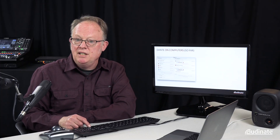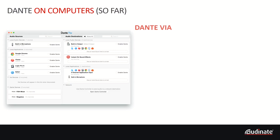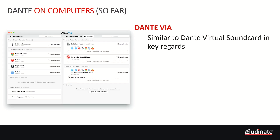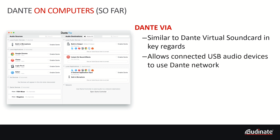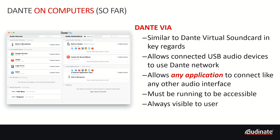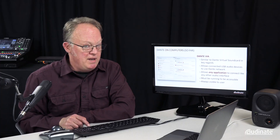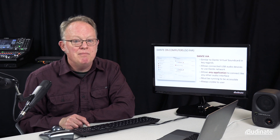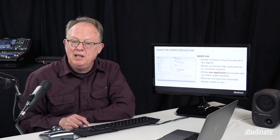We've also had Dante Via. Dante Via has a lot of similarities to Dante Virtual Soundcard, with one important difference: it allows connected USB interfaces to participate in the Dante network as well. It also allows any application to connect like any other audio interface, which is great, but this means it must be running to be accessible. And once again, users can always make changes to it, which may or may not be what you want to have happen with your application.